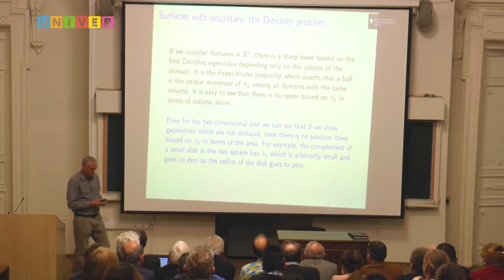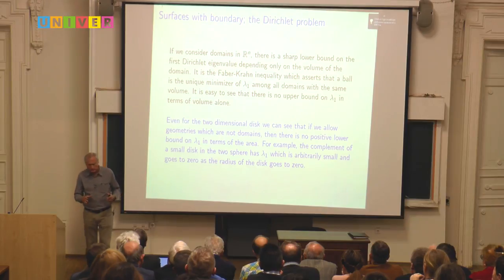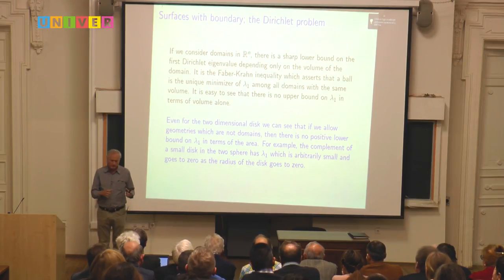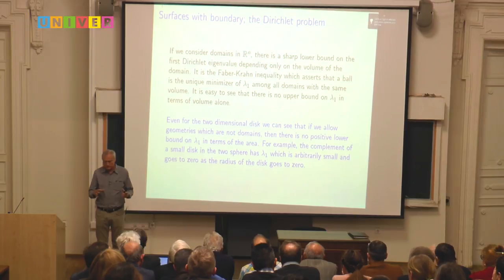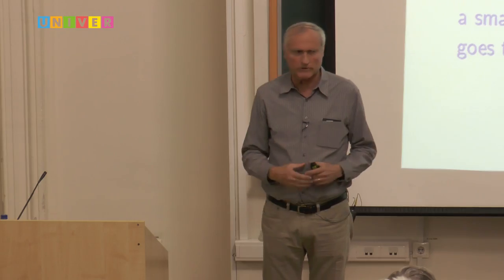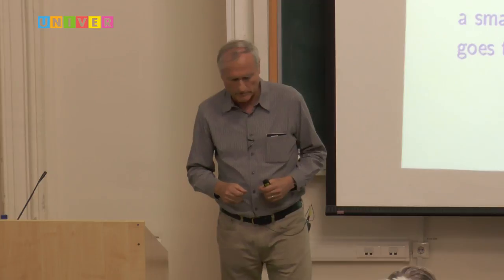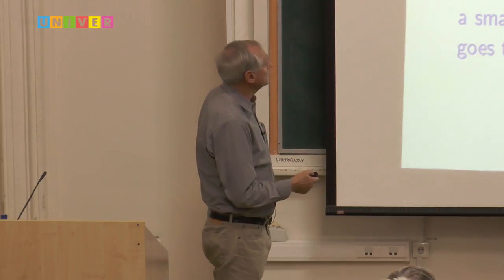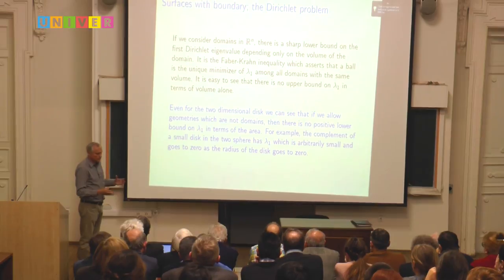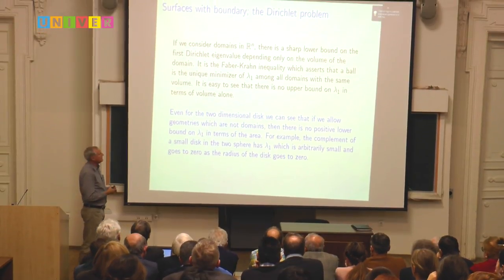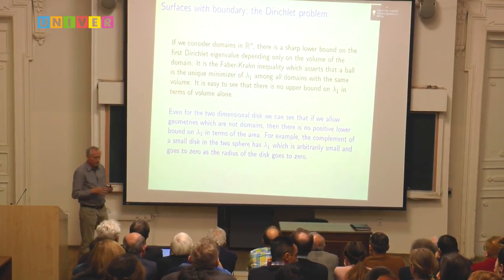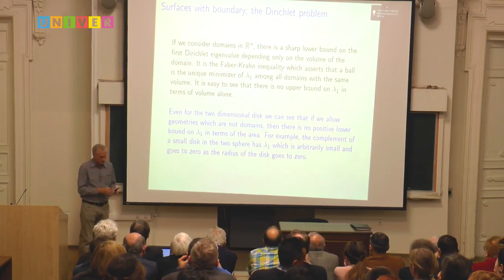I'm interested in a more geometric setting — not just domains in R^n, but arbitrary manifolds with arbitrary metrics and boundary. If we ask the question in that setting, it's quite easy to see that there's no generalization of the Faber-Krahn inequality without imposing some geometric restrictions.